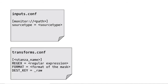Similarly, in transforms.conf, you define the stanza name, the regular expression, and the value of that regular expression. The format of the mask and the test_key should equal raw data. So in transforms.conf, when you have a stanza with a test key, you need to define raw data for that configuration.